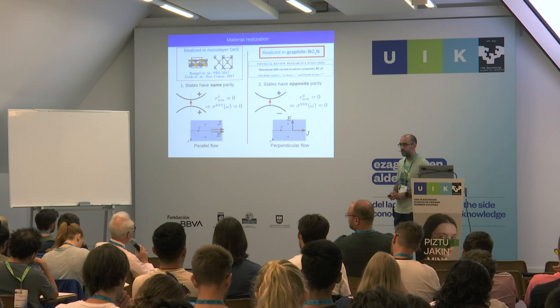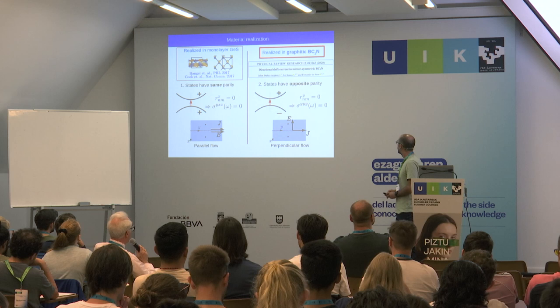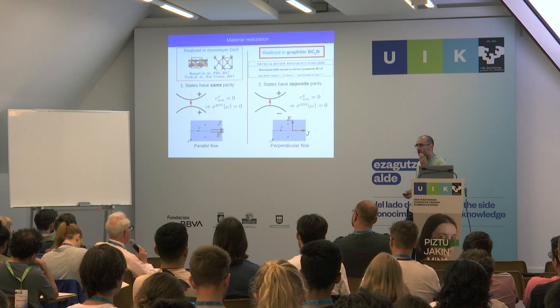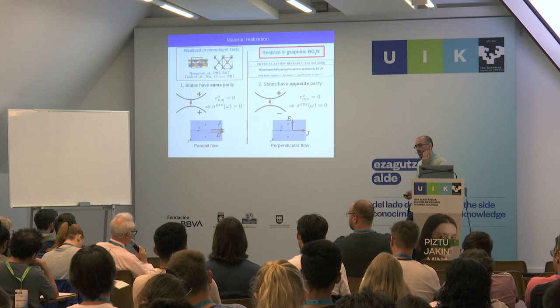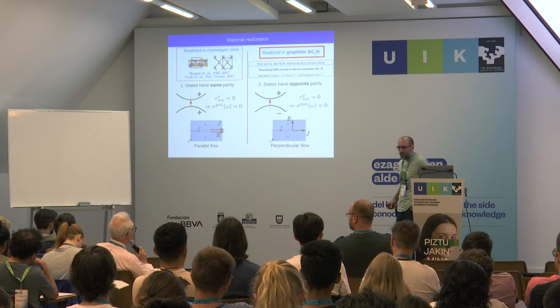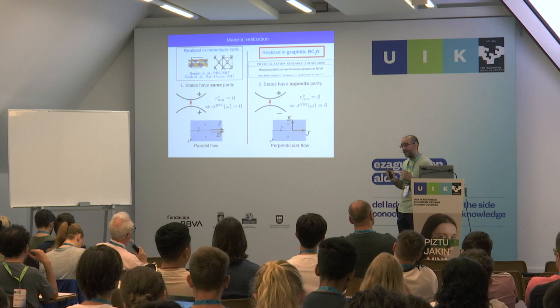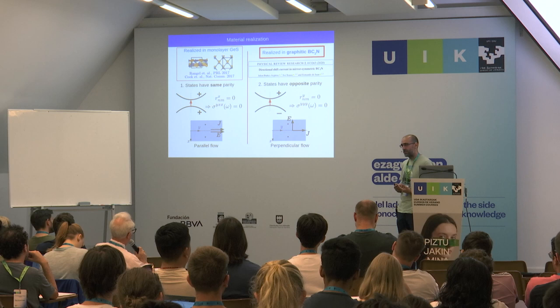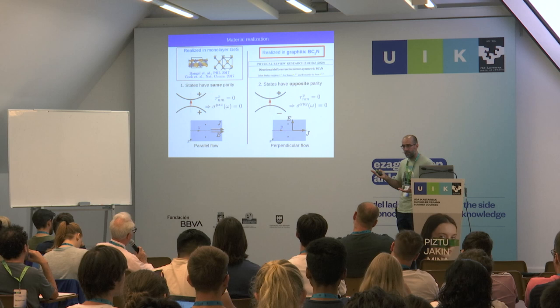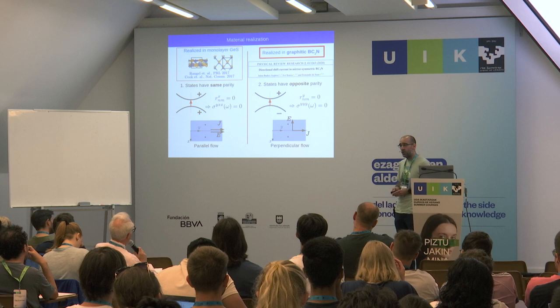Regarding whether the same dipole selection rule analysis would apply to second harmonic generation: in second harmonic generation you mix ω with ω rather than ω with −ω, and the expression for those matrix elements has many more terms. It's way more complicated than shift current, and it's uncertain whether you could kill off all relevant terms. This was not checked for the SHG case.